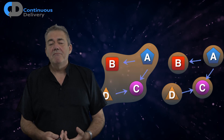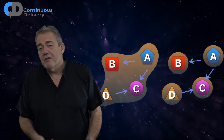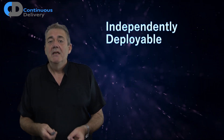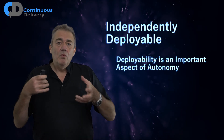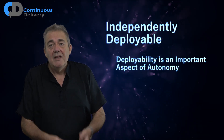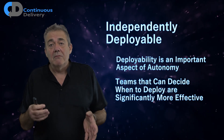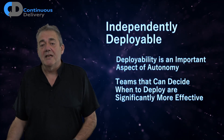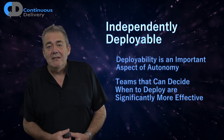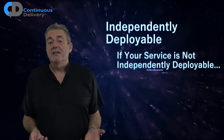So if we can have distributed monoliths organized as a collection of services — which is probably my preferred architectural approach for many systems — what does microservices add to that? The key thing is that they are independently deployable. Deployability is one aspect of autonomy, but it's an incredibly useful one. If we can work on changes to our service and deploy it without interacting with other groups of people, we can make progress without being constrained by those groups. If I need to care about dependencies on other services before I release, my software is not really independently deployable.